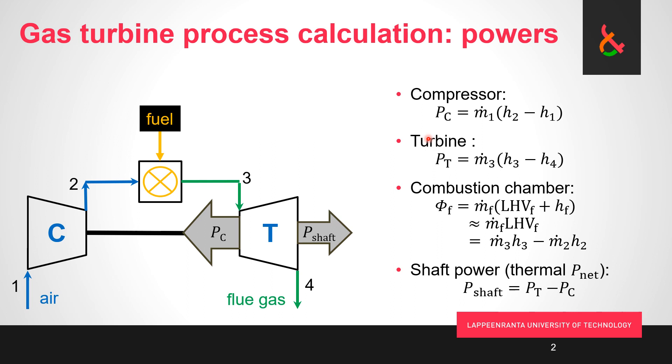The power consumption of the compressor, as with any component where we have just one flow going through in stationary state, the power consumption is mass flow rate times the enthalpy change. So h₂ is going to be higher in a compressor because it consumes power. Turbine is the same idea but now h₃ is the higher because we are producing power.